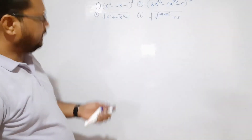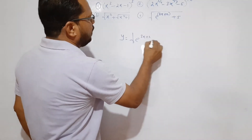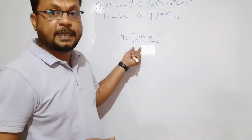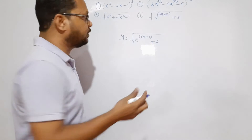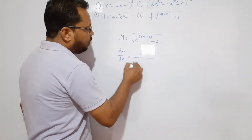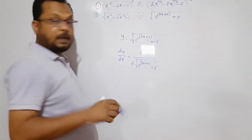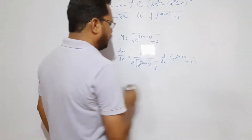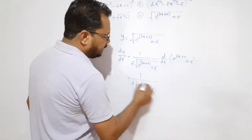The fourth example: y = √(e^(3x+2) + 5). Here the function has an exponential e raised to (3x+2) inside a square root. Applying the composite method systematically, dy/dx first step is 1/(2√(e^(3x+2) + 5)) multiplied by the derivative of (e^(3x+2) + 5).